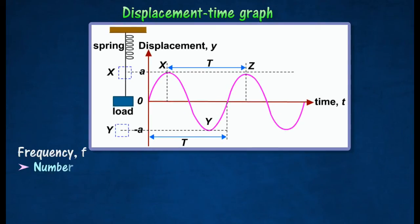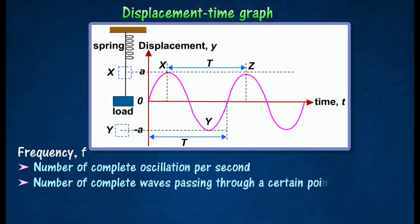Frequency is the number of complete oscillations per second made by a source that generated waves. The number of complete waves passing through a certain point in one second also equals the frequency.